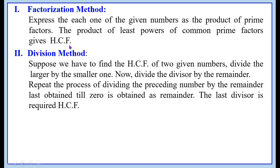The second method is the division method. Suppose we have to find the highest common factor of 2 given numbers. Divide the larger by the smaller one. Now divide the divisor by the remainder. Repeat the process of dividing the preceding number by the remainder last obtained, till 0 is obtained as remainder. The last divisor is the required HCF.